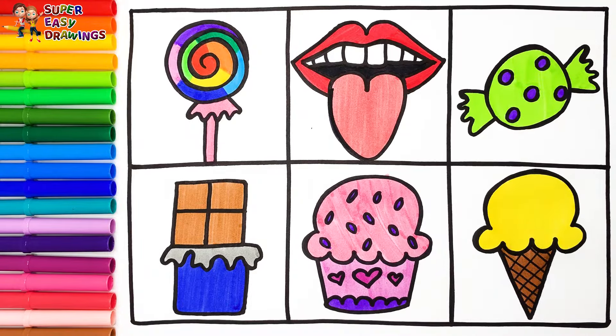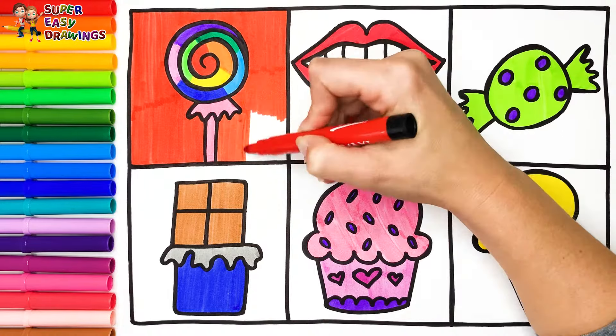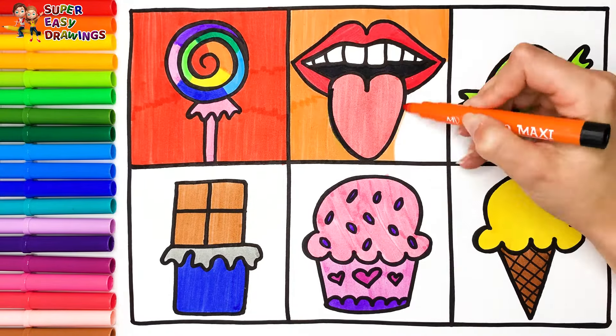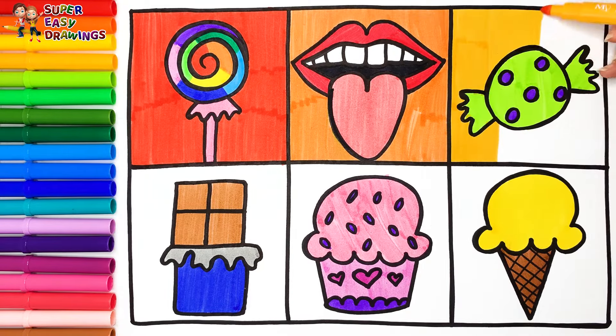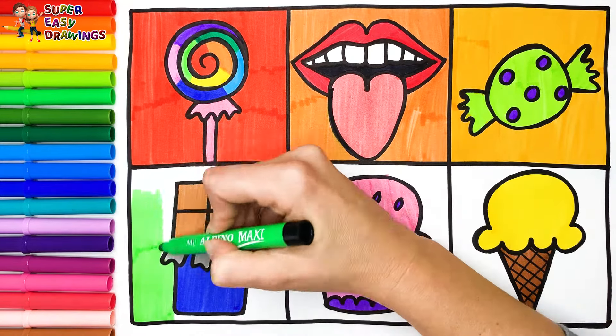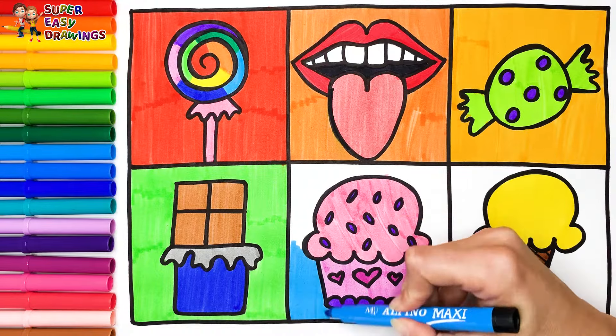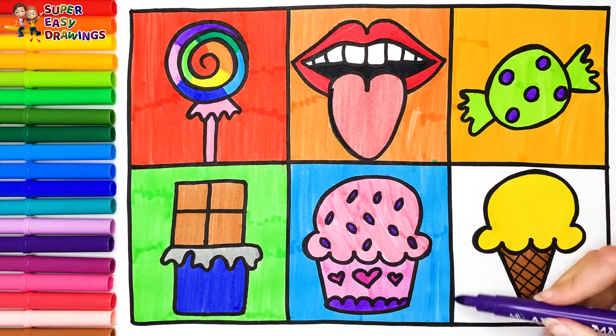For the squares, I'm going to use the colors of the rainbow. Red, orange, yellow, green, blue, and finally purple.